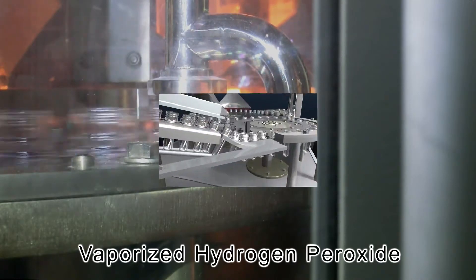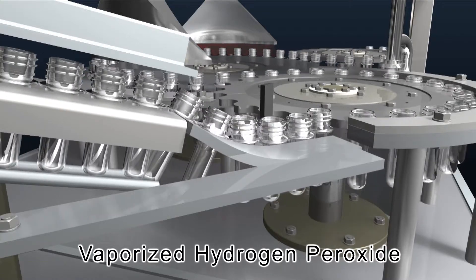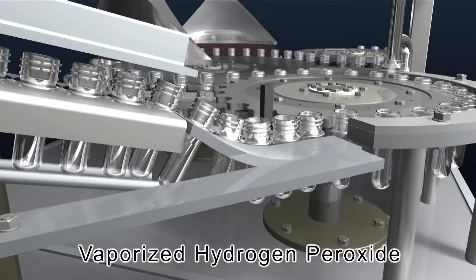In the first wheel, the insides and outsides of the preforms are simultaneously sprayed with a hydrogen peroxide mist.